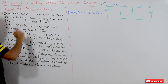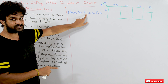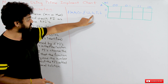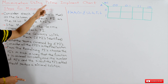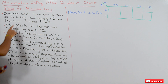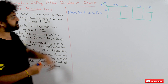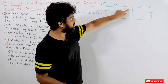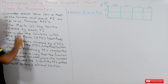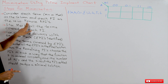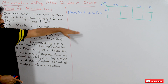The first step is to consider each term — which may be a min term or a max term — as a column of the prime implicant chart. Each PI, meaning each prime implicant or minimized solution, is considered as a row.